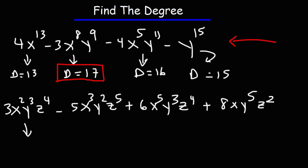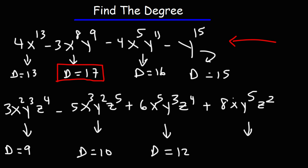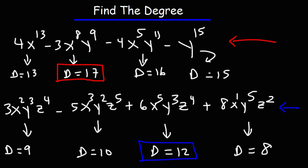Now for the next example, we have a polynomial with three different variables: x, y, and z. Let's find the degree of each monomial. For the first term: 2 plus 3 plus 4 is 9. For the second: 3 plus 2 plus 5 is 10. For the third: 5 plus 3 plus 4 is 12. And for the last term, there's an invisible 1, plus 5, plus 2 gives 8. So the highest degree is 12, and this polynomial has a degree of 12.